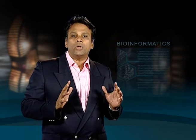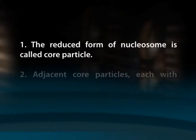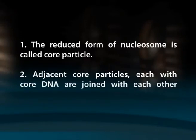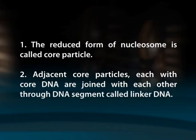When nuclease treatment was prolonged beyond the cleavage between nucleosomes, the DNA was removed from both free ends, yielding particles containing DNA of only 146, or sometimes 140, nucleotide pairs instead of 200 nucleotide pairs. This reduced form of nucleosome is called the core particle. Adjacent core particles, each with core DNA, are joined through a DNA segment called linker DNA, which is removed during prolonged digestion.